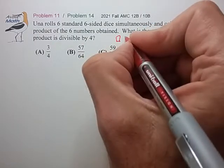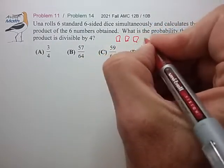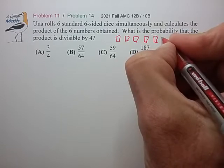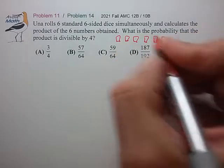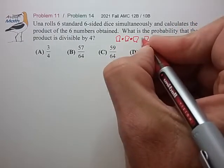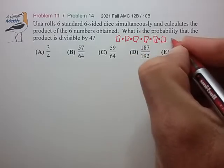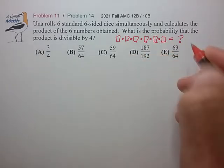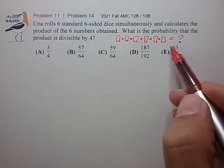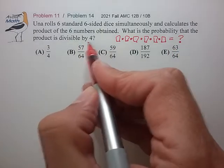All right, so we're going to take six standard dice, roll them, and calculate the product of the numbers obtained. We want to figure out what's the probability that this product is divisible by 4.